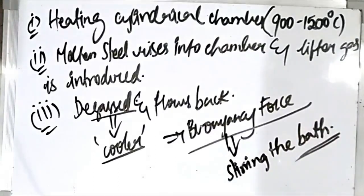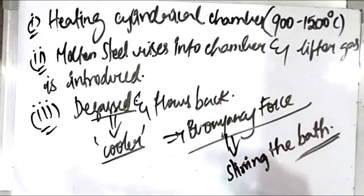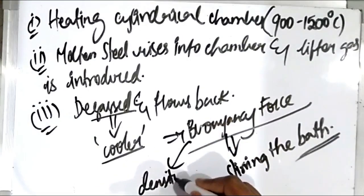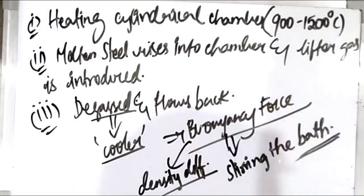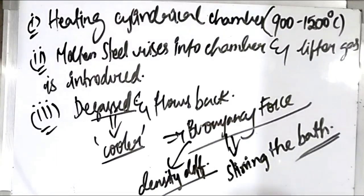Because of this stirring, undegassed steel comes up into the snorkel and degassed steel settles down — this is the recirculation. The stirring of the bath is driven by the buoyancy force created due to density differences between cooler degassed steel and hotter undegassed steel. The rate of circulation controls the degassing, and the circulation rate depends on the amount of lifter gas and the degree of vacuum.